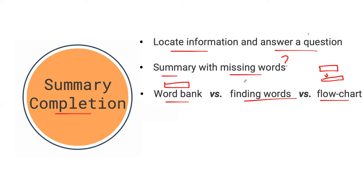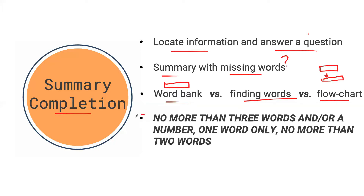If you have to find the words on your own and write them out, you will be presented with instructions. Your options will usually be no more than three words and/or a number, one word only, or no more than two words. If you see 'no more than three words and/or a number,' it's probably the most difficult instruction because you have the most options — you could write three words, two words, or even one word.